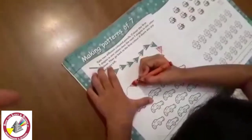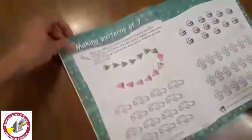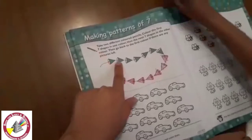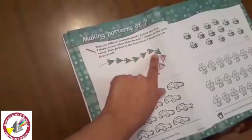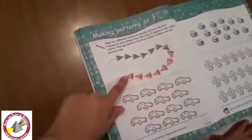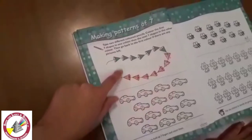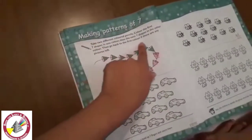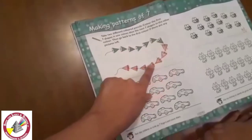All right. So what we've made over here is a pattern of seven. The first seven were which color? Green. And the next seven are which color? Red. So you've made a pattern of seven green and a pattern of seven red.